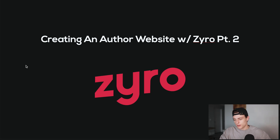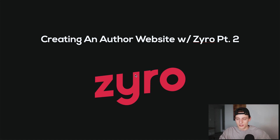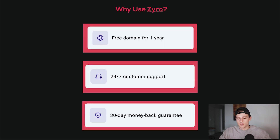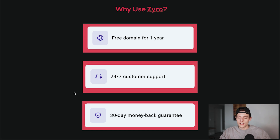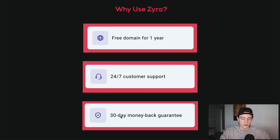I'm going to show you exactly how you can follow along with this tutorial. I'm creating this website using a tool called Zyro. Zyro is very easy to use — if you're a beginner to creating websites, this is the perfect option, and if you're advanced, Zyro has tons of features that can suit your needs. You get a free domain for the first year that you sign up — 100% free, which saves you quite a bit of money. They also have 24/7 support, which is very helpful. And if you're not happy with your purchase, they do have a 30-day money-back guarantee.